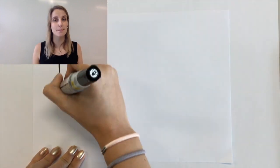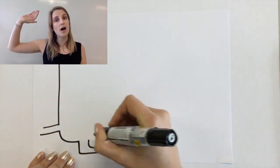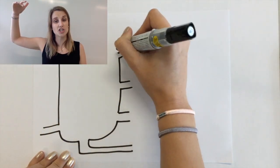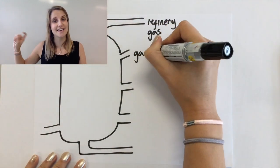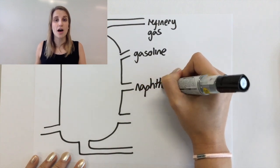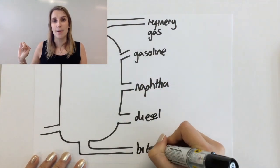The fractions that you need to memorize are going from the highest on the fractional distillation column, so the lowest boiling point, you have refinery gas to gasoline, naphtha, diesel, and then bitumen.